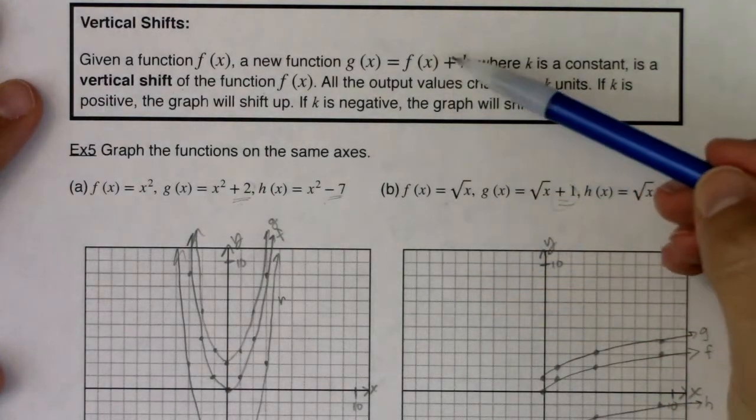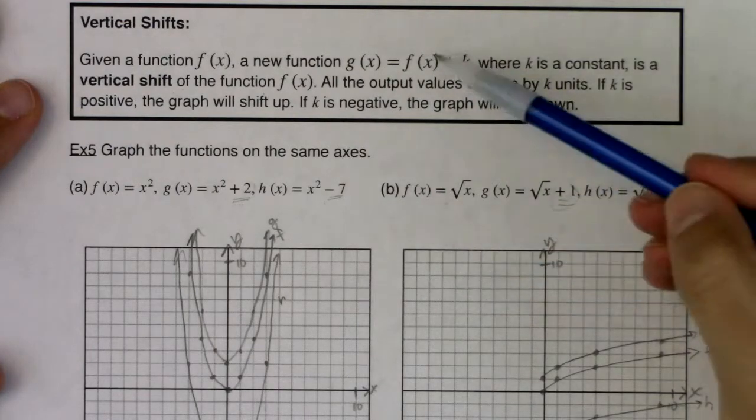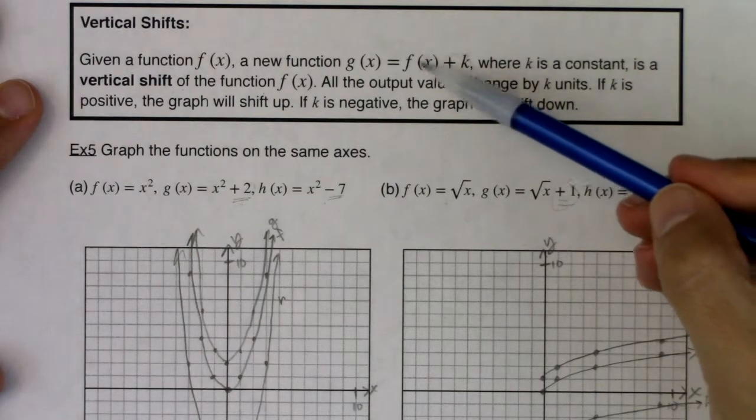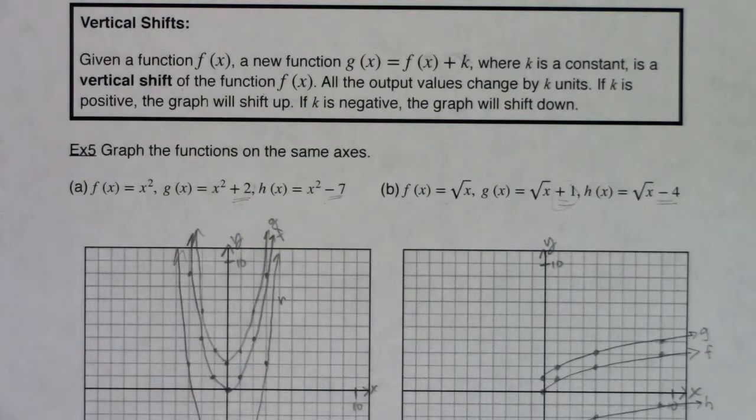Okay. And now what we're going to do, I should say we're adding a constant outside the function symbol, outside the grouping symbol, that moved us up and down. Now what we're going to do is we're going to add a constant inside this grouping symbol, and that's going to move us left and right. Alright, guys, I'll see you in a few. Bye.